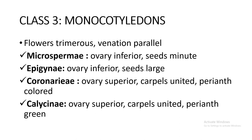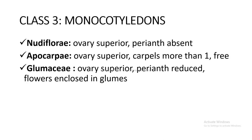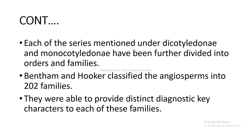Series of Monocotyledons: Microspermi — ovary inferior, seeds minute and numerous; Epigynae — ovary inferior, seeds large; Coronarieae — ovary superior, carpels united, perianth colored; Calycinae — ovary superior, carpels united, perianth green; Nudiflorae — ovary superior, perianth absent; Apocarpi — ovary superior, carpels more than one, free; Glumaceae — ovary superior, perianth reduced, flowers enclosed in glumes. Each of these series under Dicotyledonae and Monocotyledonae have been further divided into orders and families. Bentham and Hooker classified angiosperms into 202 families with distinct diagnostic characters for each.